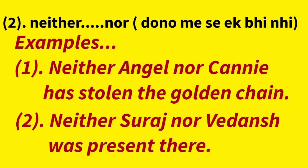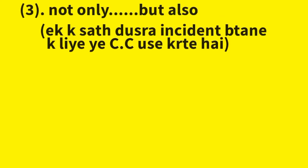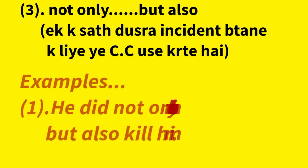I hope you are all enjoying this video. Moving ahead, the third correlative conjunction is not only...but also. Its meaning is to describe two incidents together — not only this one but also this one. Let's look at the examples.